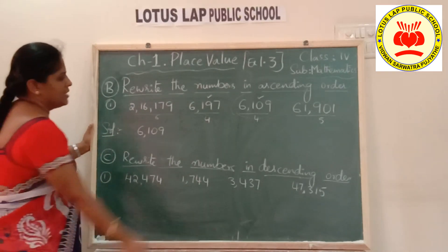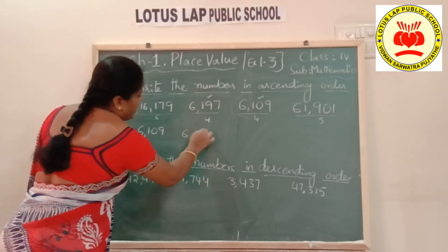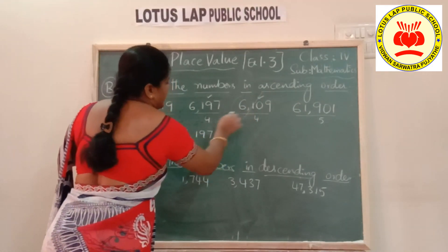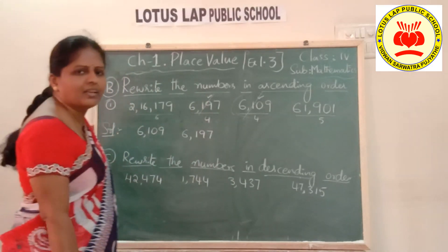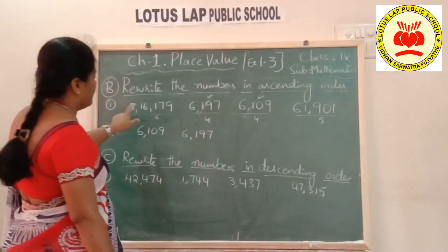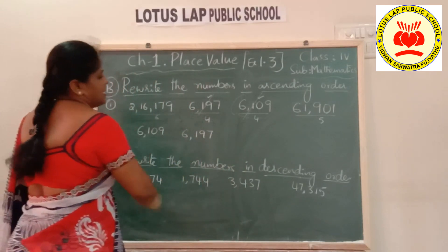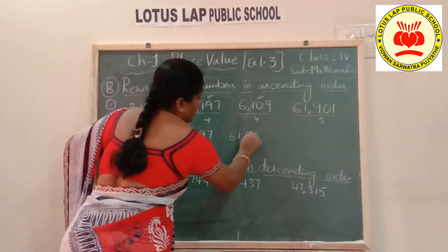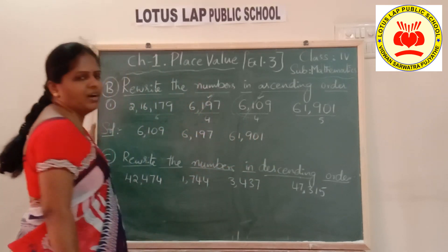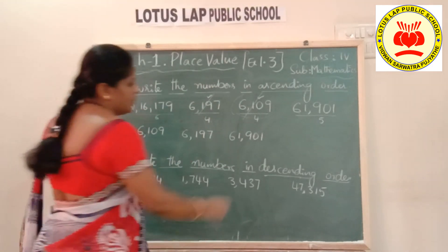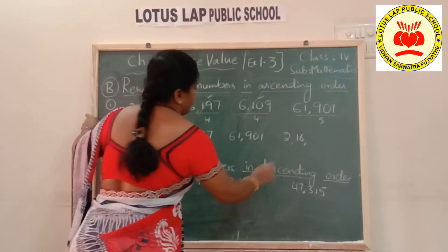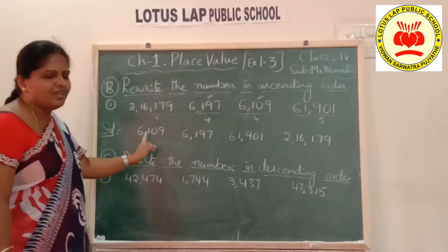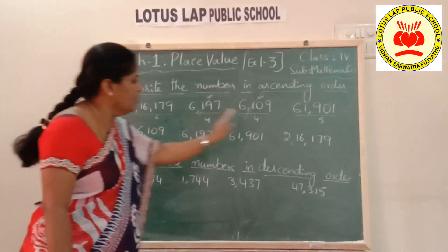Writing the answer from small to big: first is 6,109, then 6,197. Strike off the completed numbers so you don't get confused. The next two numbers have six digits and five digits — the five-digit number is smaller. So third is 61,901 and last, the biggest, is 2,60,179. We have arranged the numbers in ascending order from small to big.